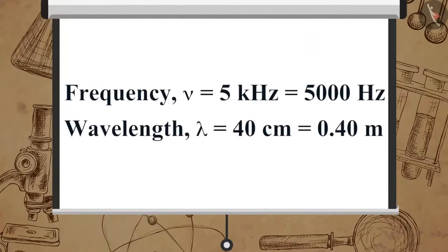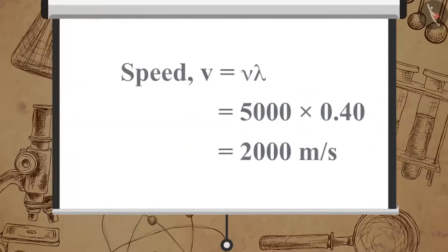Here, frequency nu is equal to 5 kilohertz, which is equal to 5000 hertz. Wavelength lambda is equal to 40 centimeters, which is equal to 0.40 meter. Speed V is equal to nu multiplied by lambda, which is equal to 5000 multiplied by 0.40, which is equal to 2000 meters per second.